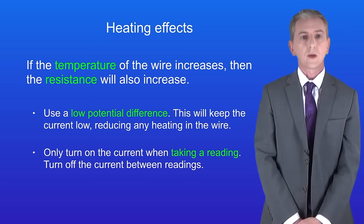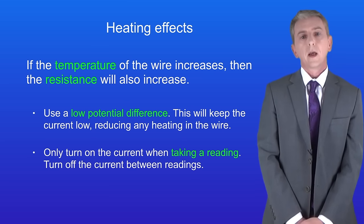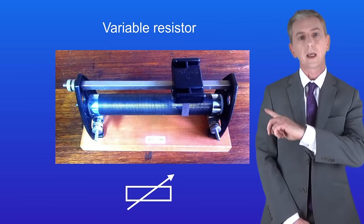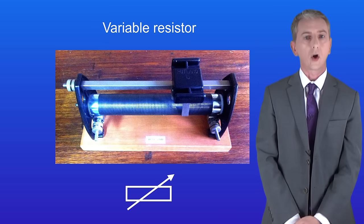So as we've seen, we can increase the resistance in a circuit by using a longer wire. And that's really useful. We find this idea in a variable resistor, which I'm showing you here. A variable resistor contains a long piece of wire in a coil.